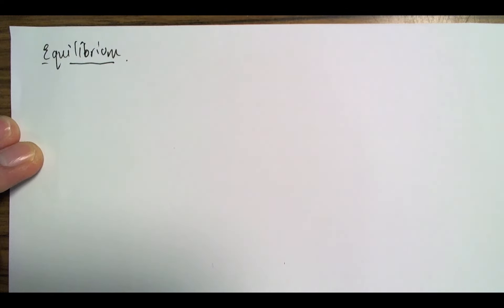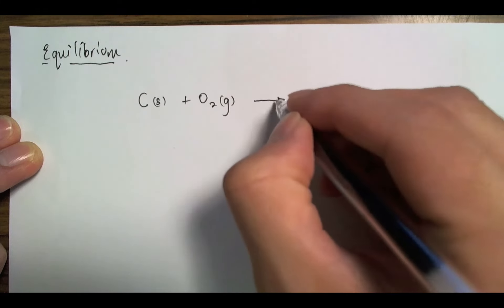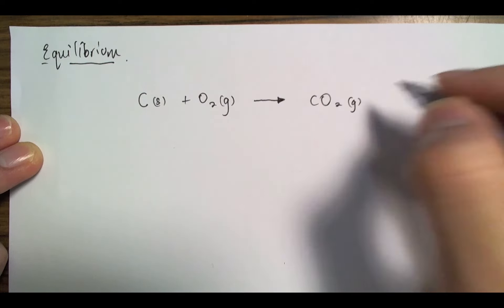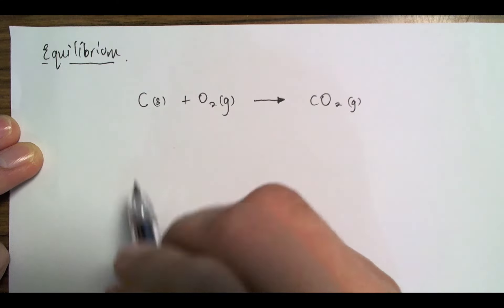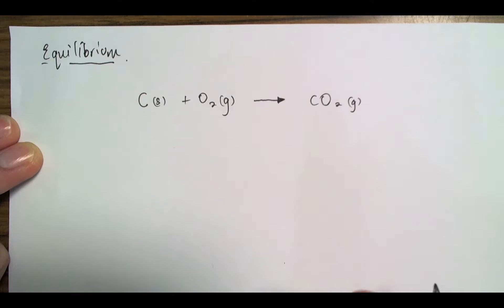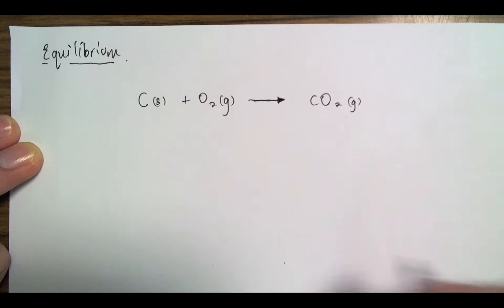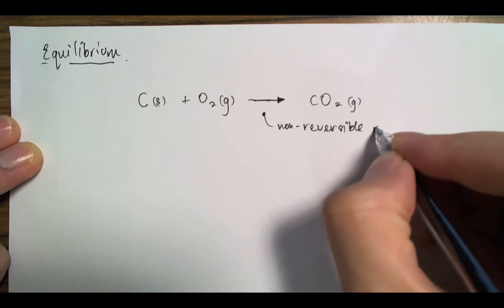So, let's take a look at the sorts of reactions that you're familiar with up till now — they go all the way. Take, for example, the combustion of carbon in oxygen. I'm going to take some carbon powder and burn it completely in oxygen, and all of it will convert to carbon dioxide gas, theoretically anyway. And this carbon dioxide now has no tendency whatsoever to break up to form oxygen or carbon — it's just released into the air and it's gone. I've drawn an arrow in one direction, and this sort of reaction we call a non-reversible reaction.